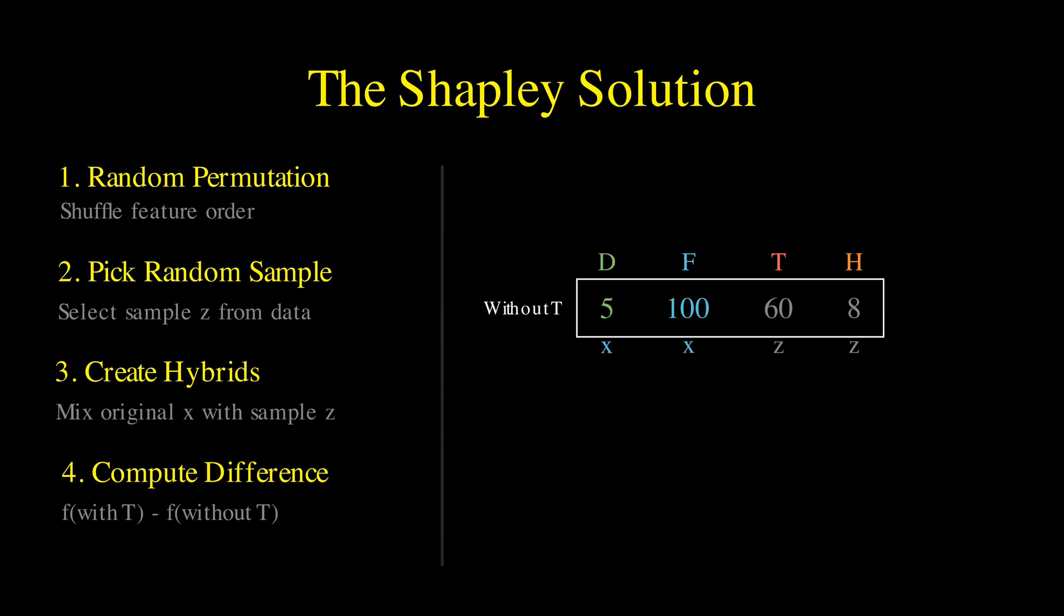For temperature and everything after it, we use the values from our random reference sample. We feed this hybrid into the model, and it predicts 850 cones. Next, look at the with T box. It is identical to the first one, except for one crucial change.